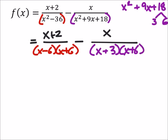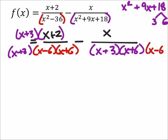So on the left there, we're missing an x plus 3, so I'll multiply it by the numerator as well. And on the right, we're missing an x minus 6, so I have to multiply it by the numerator and denominator.